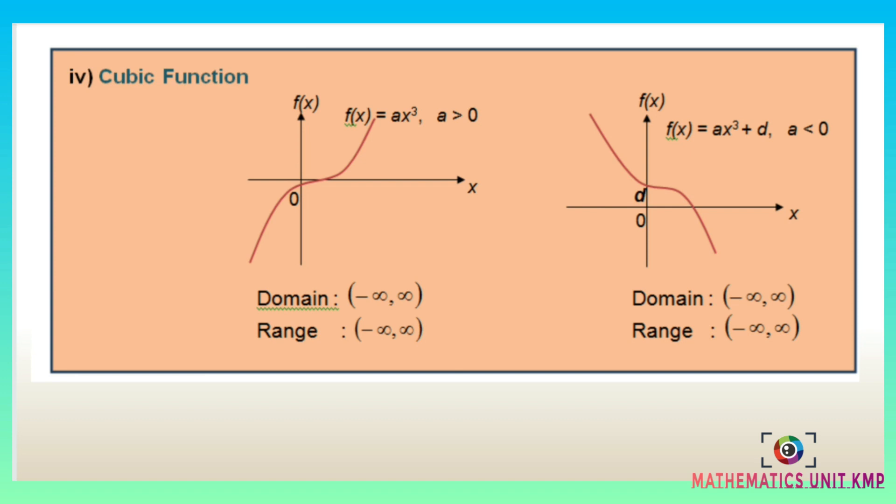We continue our lesson for cubic functions. The general form of a cubic function is f(x) equal to ax³ plus bx² plus cx plus d.